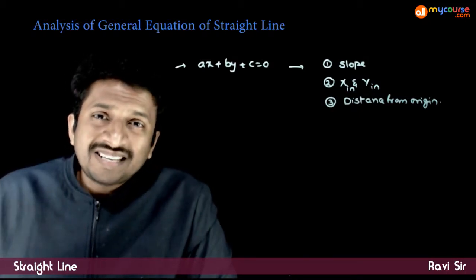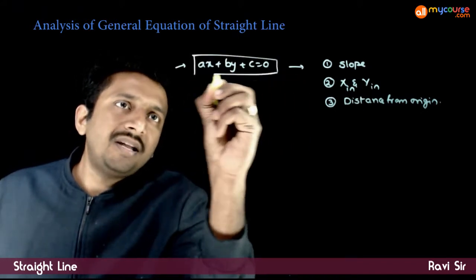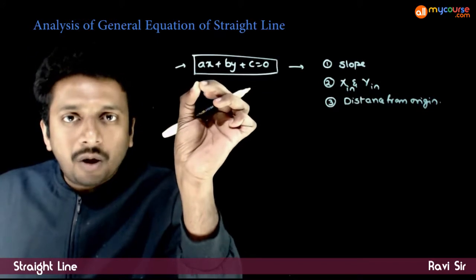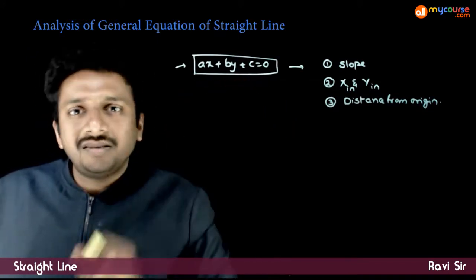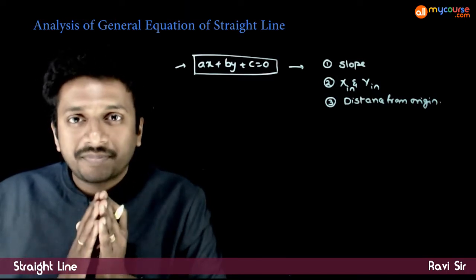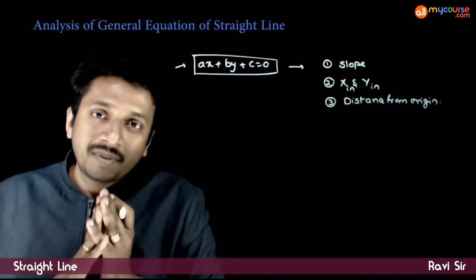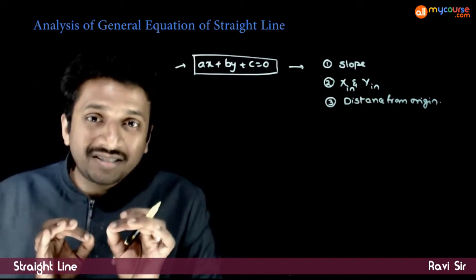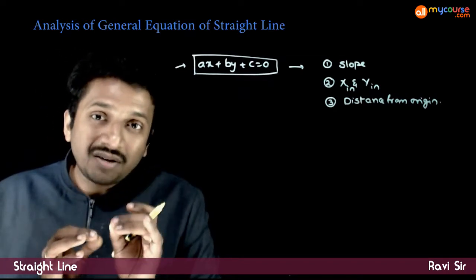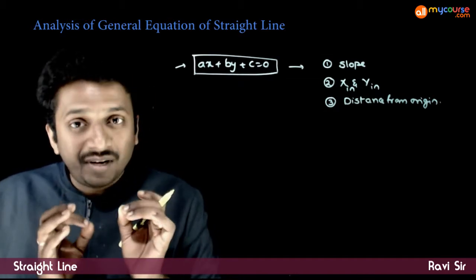In this video, let us see how we can analyze the general equation of a straight line. That is, if an equation of the form ax plus by plus c is equal to 0 is given, we have already seen that it represents a straight line. Now, how can you find the slope of the straight line, how can you find the x-intercept and y-intercept, and how to find the distance of this line from origin? These are the three things that we will learn.